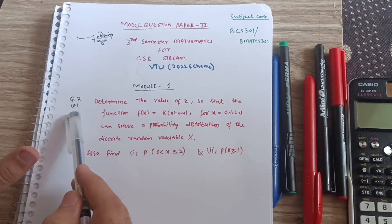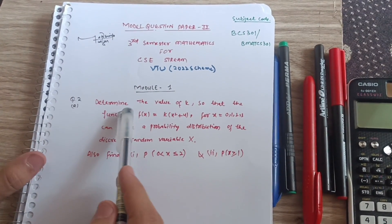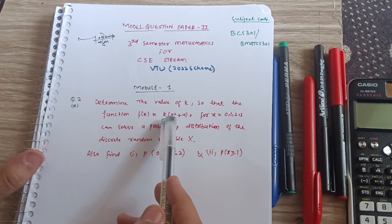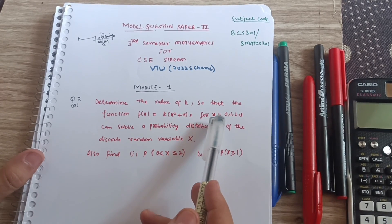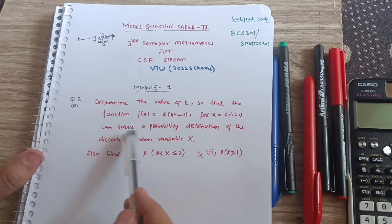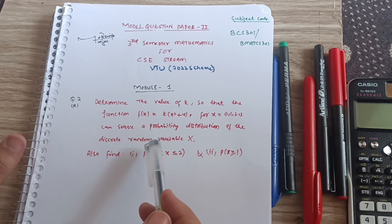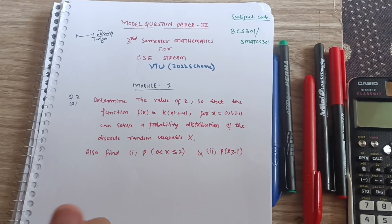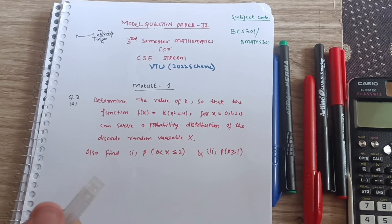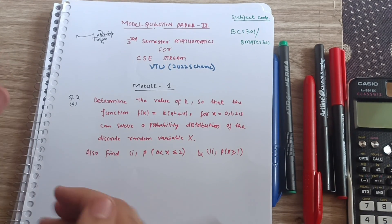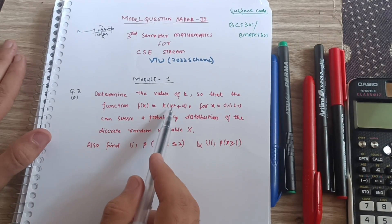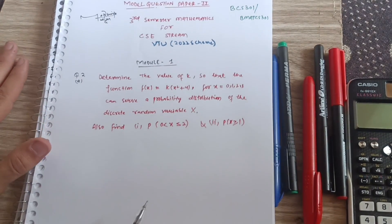Question 2a: determine the value of k so that the function f(x) = k(x² + 4) for x = 0, 1, 2, 3 can serve as a probability distribution of the discrete random variable x. In previous questions, tables were directly given, but in this question they have given the function f(x) = k(x² + 4), so we have to make a table.